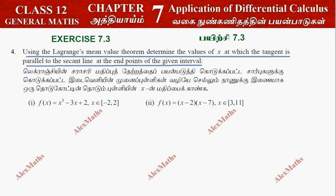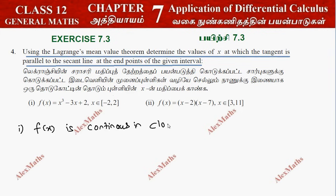This is the meaning of Lagrange's Mean Value Theorem — the tangent is parallel to the secant of the interval. The polynomial function is continuous in the given interval. So f(x) is continuous in the closed interval [-2, 2].